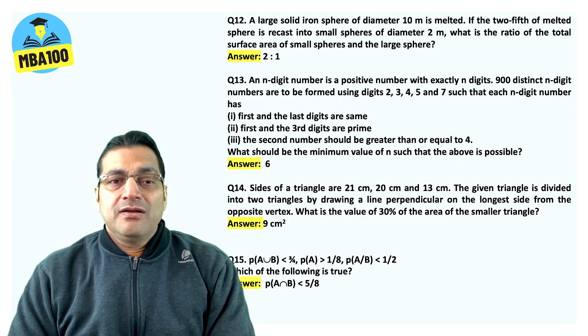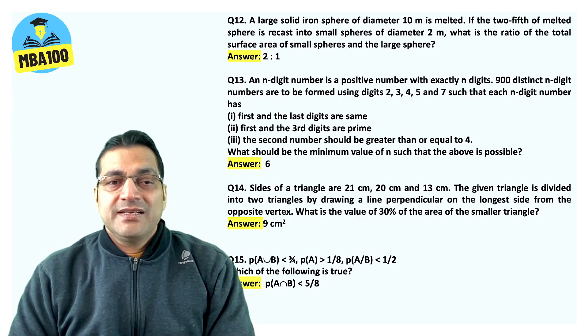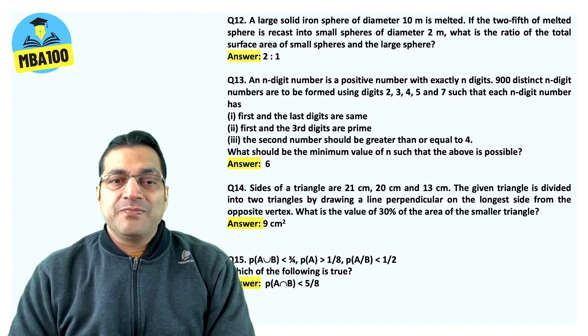Again, this theoretical looking question 15. The answer is probability of A intersection B is less than 5 by 8.